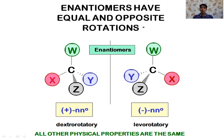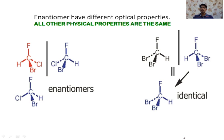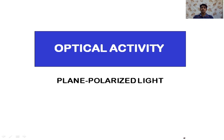An important property of enantiomers is that they have equal and opposite optical rotations. The magnitude of rotation is the same but with different signs: if it is positive it is called dextrorotatory, and if it is negative it is called levorotatory. All other physical properties of enantiomers are the same — only their optical properties differ.